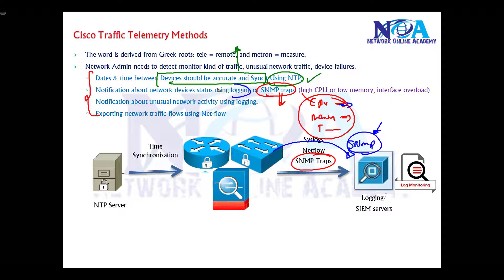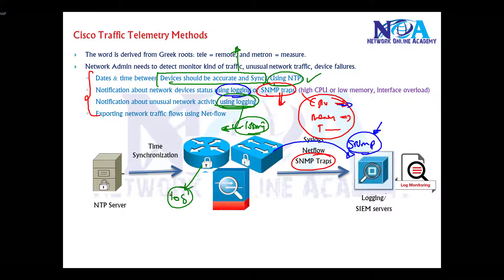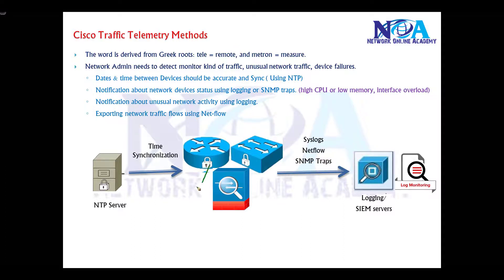We'll also be enabling something called logging. Logging is a feature where we can keep track of the events and changes happening in your network. We can tell the device to send log messages if any traffic matches or any incident happens — such as an interface going down or an EIGRP neighborhood going down.